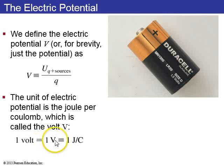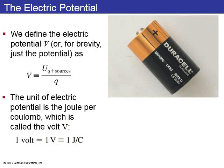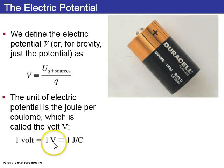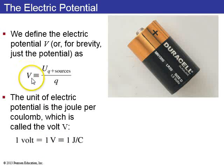One volt, or one V, is equal to one joule per Coulomb. So this is a kind of weird thing where the symbol for electric potential is V, and the units for electric potential are also V. We're using the same letter for the quantity electric potential and the units of electric potential.